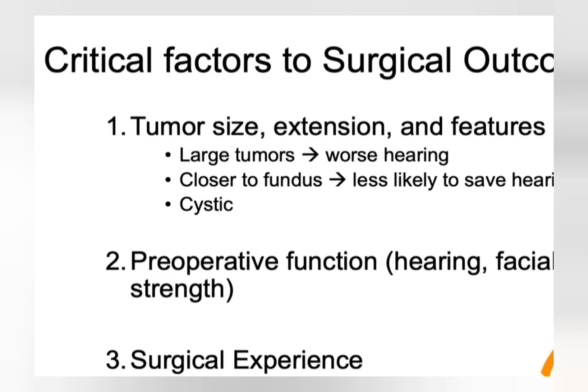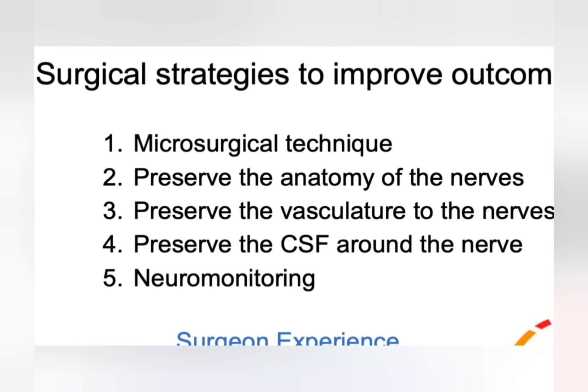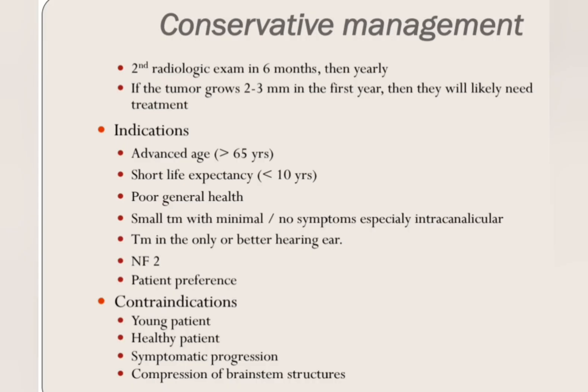The outcome of surgery depends on the preoperative function of the hearing and facial nerves, the surgical experience of the surgeon, and tumour factors such as size and location. To improve surgical outcome, neuromonitoring — such as a facial nerve monitor — must be used so the nerves are not paralysed. Vasculature is most important; it should not be disturbed. Less manipulation and less use of cautery near the nerve are important parameters.